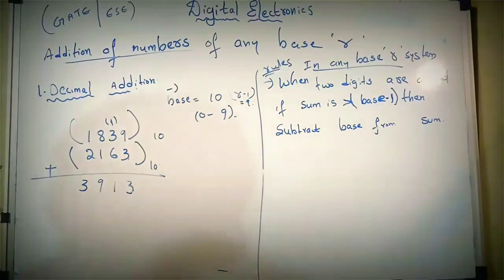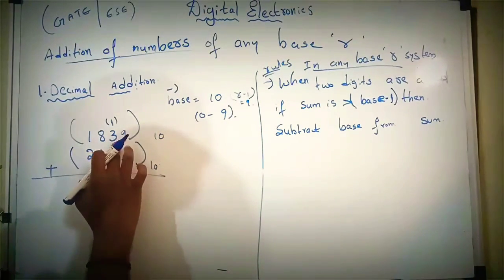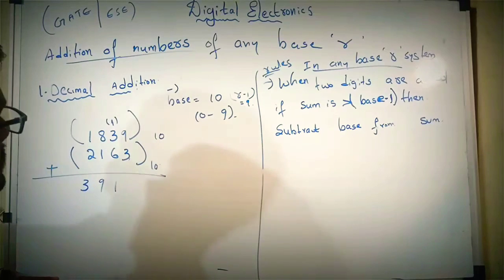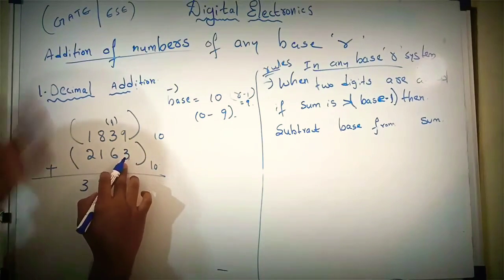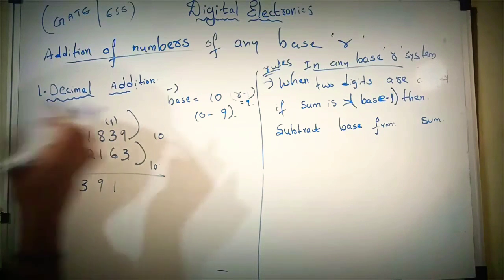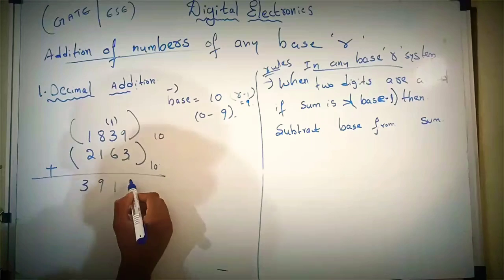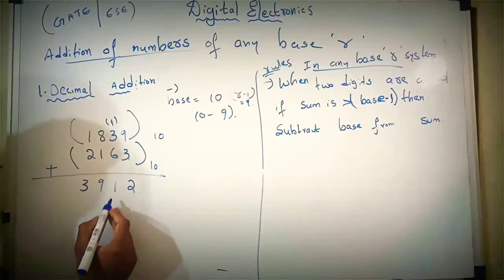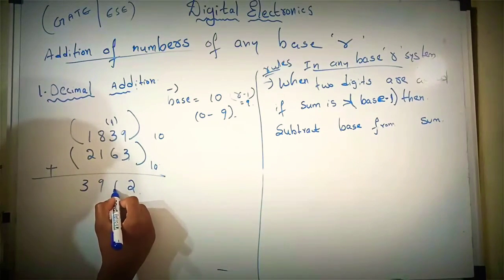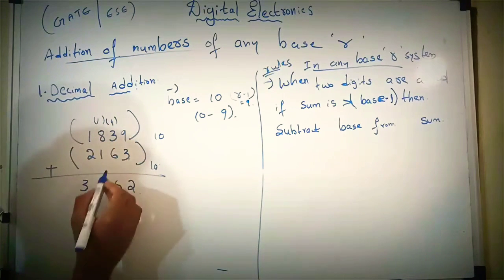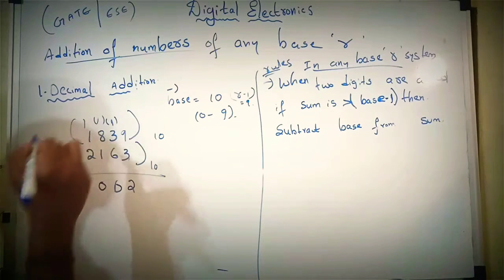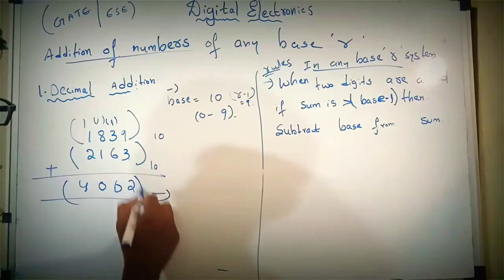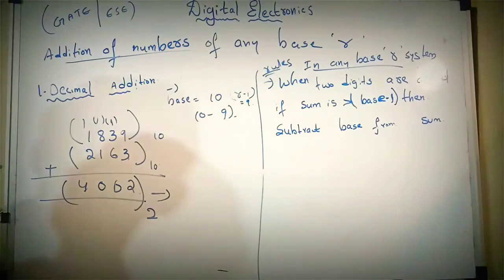Here carry: 8 plus 1, 2 plus 3. 6 plus 3 is 9, plus 1 is 10. 10 minus 10 is 0. So here 9 plus 3 is 12, and 12 is greater than the base. So 12 minus 10 is 2. There will be carry 1. 6 plus 3 is 9, plus 1 is 10. 10 minus 10 is 0. Carry will be 1. Here 8 plus 1 is 9, 9 plus 1 is 10. Carry will be 1. This is 4. This is the decimal equivalent value of two decimal numbers on addition.